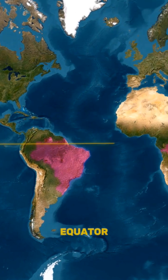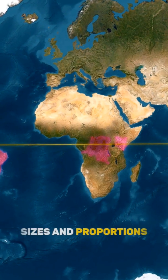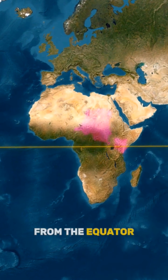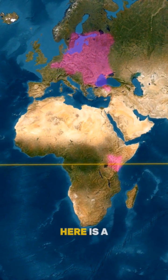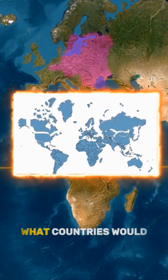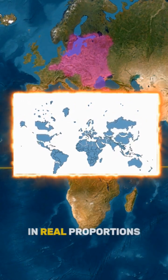Countries that are closer to the equator have more correct sizes and proportions. But the further from the equator, the more the countries stretch upwards and distort in scale. Here is a visual example of what countries would look like in real proportions.